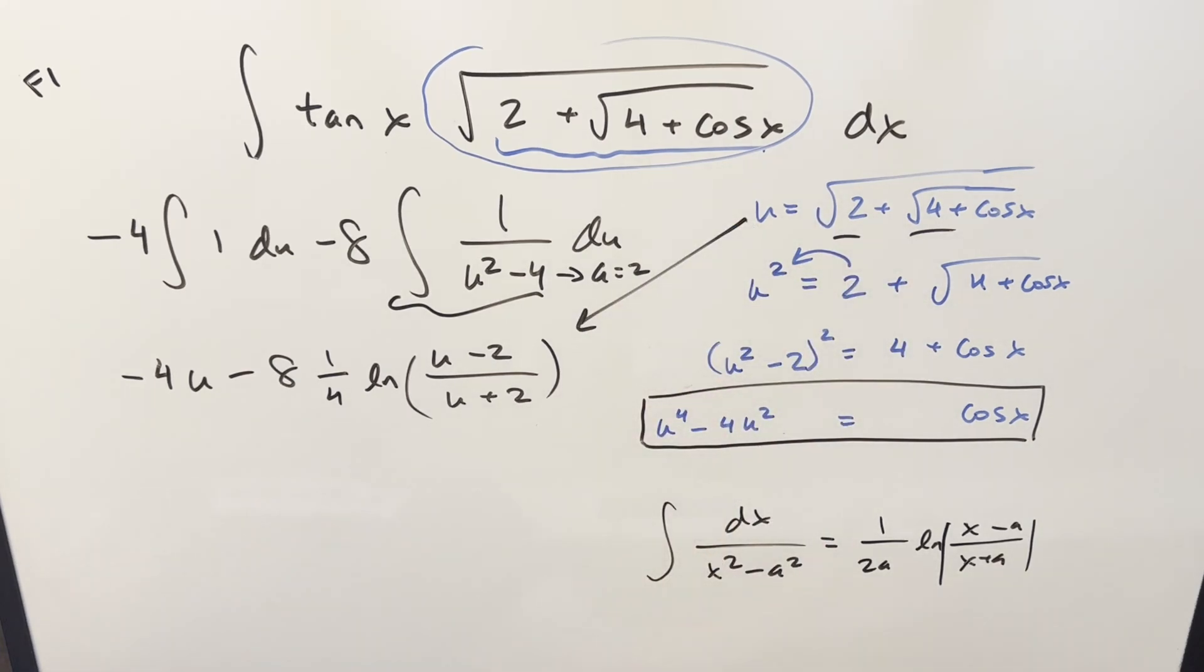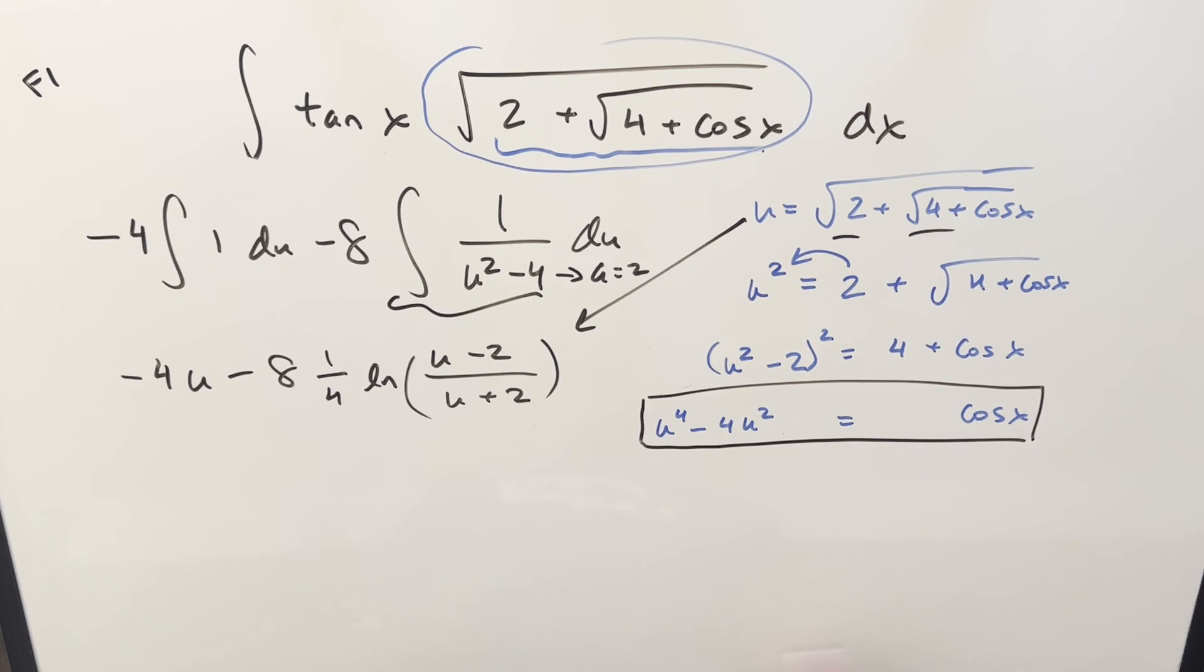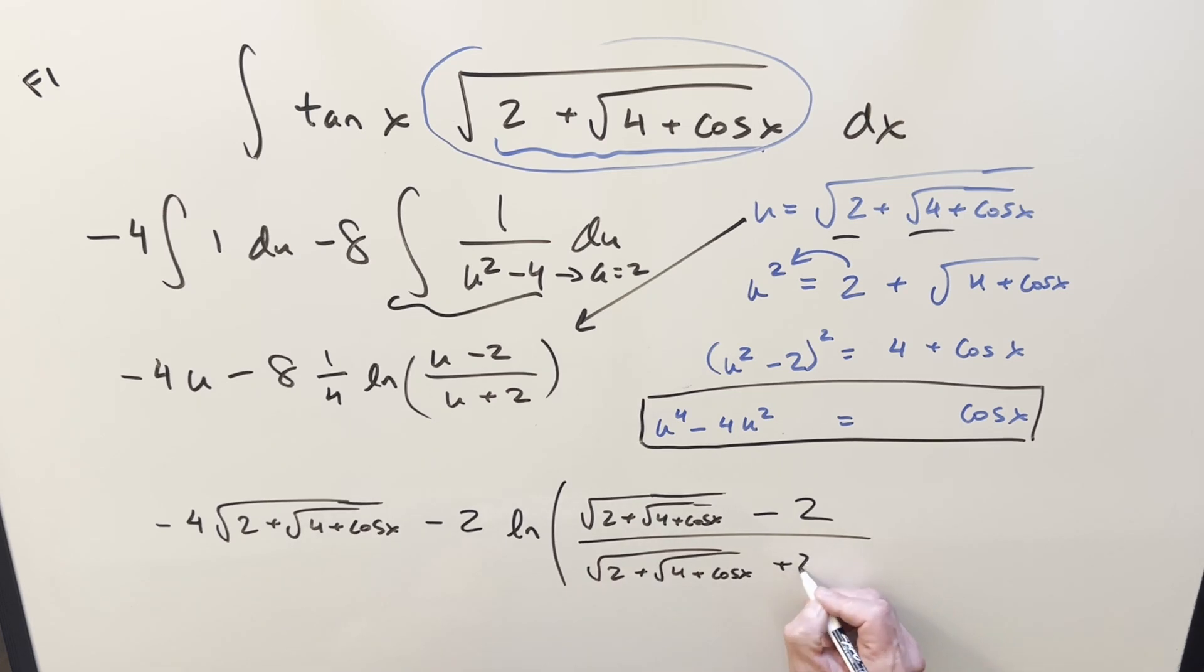So for my final solution on it, let me get a little space. So for my final solution, it's going to be minus 4 square root 2 plus square root 4 plus cosine x. This here is going to become minus 2 natural log, and this part is a real mess because we're plugging in this big square root here. So it's going to be square root 2 plus square root 4 plus cosine x minus 2 over the same thing, plus 2, add a plus c, and that's it.